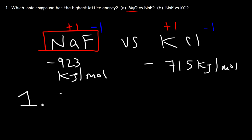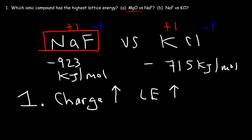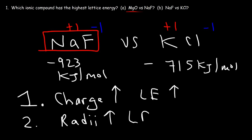Always give the charge more priority than the sizes of the ions. If the charges are different, the compound with the greatest lattice energy will be the one with the highest charges. If the charges are the same, then look at the sizes of the ions — as ionic radii increase, lattice energy will decrease. So you're looking for ions with the highest charge and the smallest ionic radius. That's how you determine which compound has the highest lattice energy.